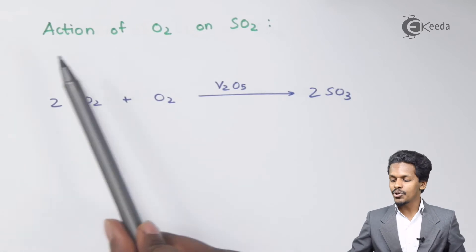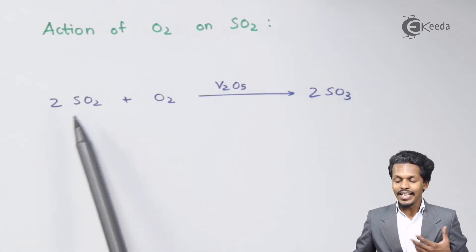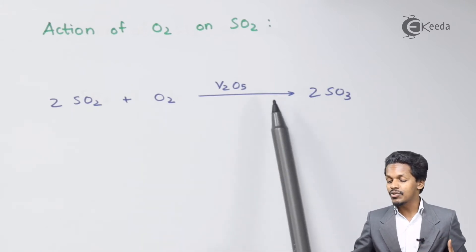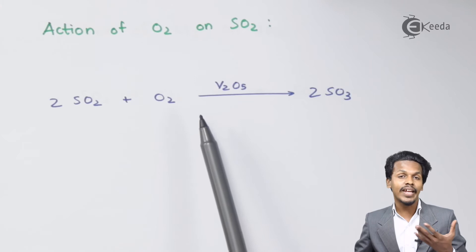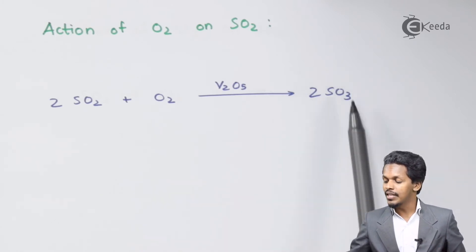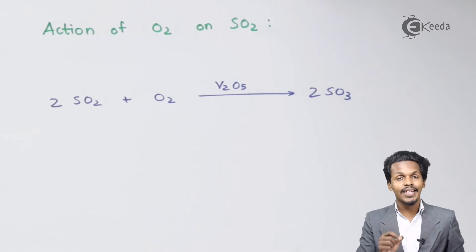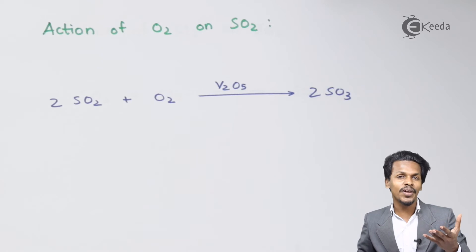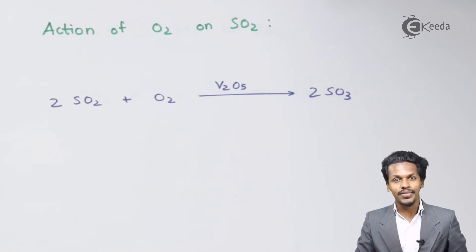Now let us understand the action of O2 on SO2. Sulfur dioxide, when treated with O2 in the presence of the catalyst V2O5 (vanadium pentoxide), forms two moles of SO3. This reaction is very important in the contact process, where we can prepare H2SO4, which we will discuss in a future topic.